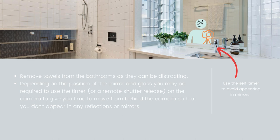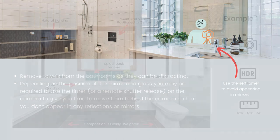If the bathroom vanity and sink are higher than the recommended camera height of 1.1 to 1.3 meters, you should raise the camera height by approximately 20 centimeters, so that you have some elevation over the sink and it does not occupy too much of the composition.